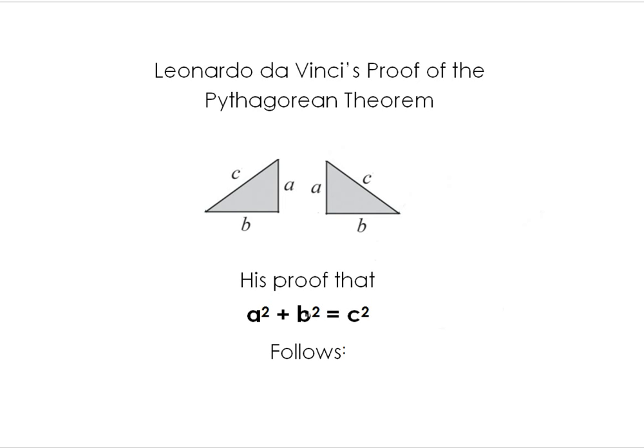Hello. Today I'd like to present Leonardo da Vinci's proof of the Pythagorean Theorem. I think you all remember that if you have a right triangle, the Pythagorean Theorem states that a² + b² equals the hypotenuse c².